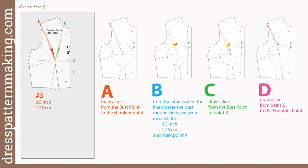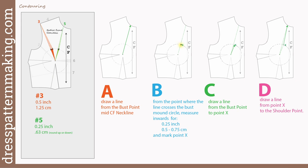So now I'll go through how to mark the standard contouring amounts on the block for numbers three and five. Starting with number three — the amounts are at the bust mound circle, and then of course it tapers up and down. Figure A: draw a line from the bust point to the shoulder tip. Figure B: where that line crosses the bust mound circle, measure inwards on the bust mound circle for half an inch or 1.25 cm and mark point X. Figure C: draw a line from the bust point to point X. Figure D: draw a line from point X to the shoulder tip. For number five, the neckline contouring: Figure A: draw a line from the bust point to approximately the mid neck. Figure B: where that line crosses the bust mound circle, measure inwards for a quarter of an inch (0.63 cm) and mark point X. Figure C: draw a line from the bust point to point X. Figure D: draw a line from point X to meet the mid neckline.